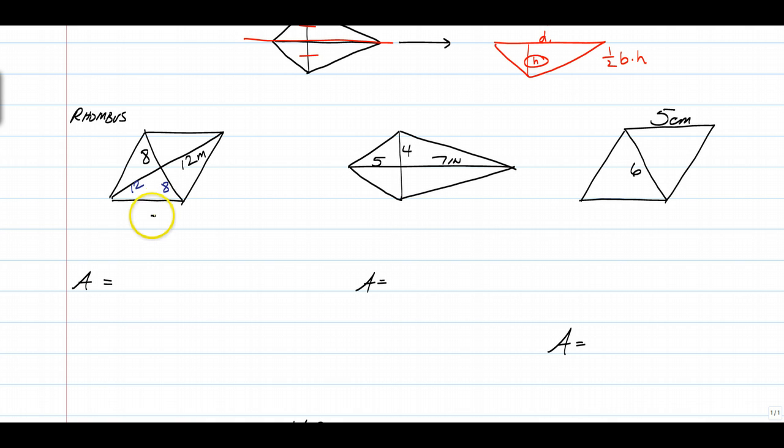all you have to do is one half of the full diagonal 16 times the other full diagonal 24, multiply those guys together and you end up with 192 meters squared.